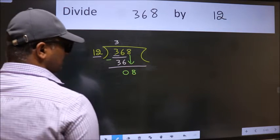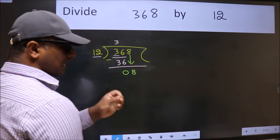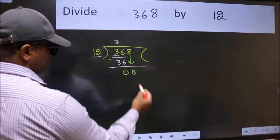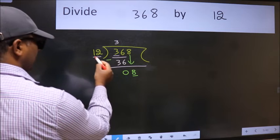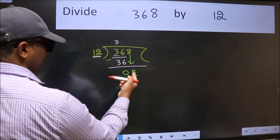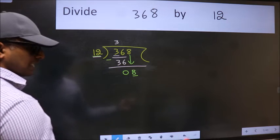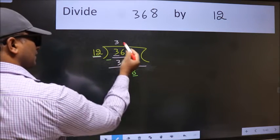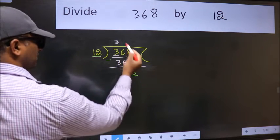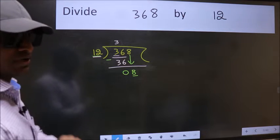After this step, the mistake happens and the mistake is this. Here we have 8 and here 12. 8 is smaller than 12. So what many do is they directly put dot, take 0, which is wrong.